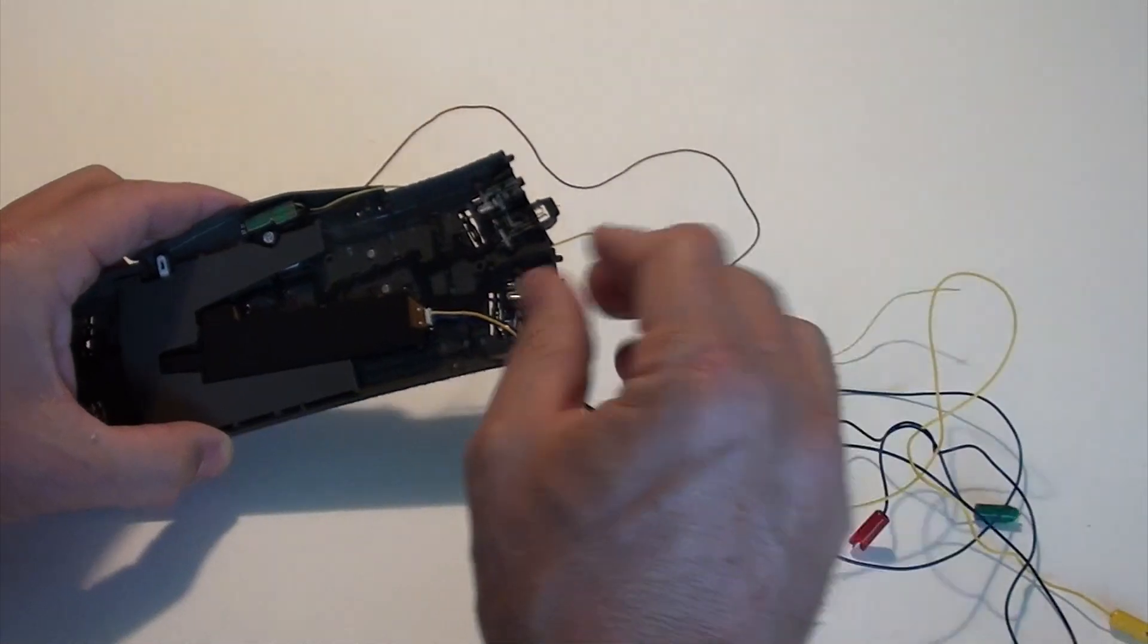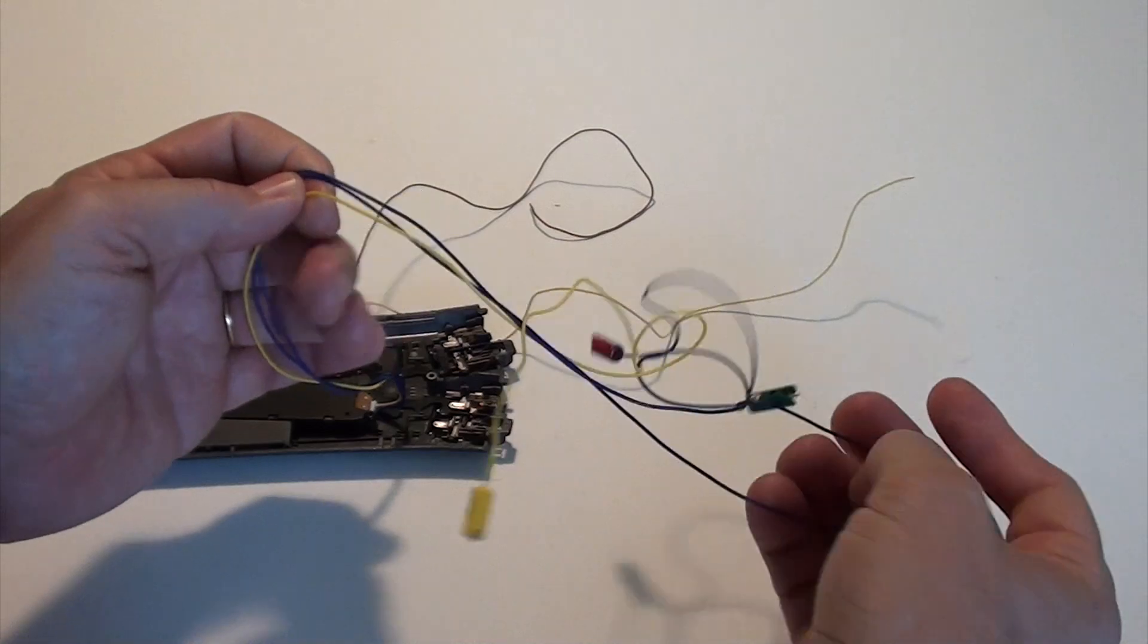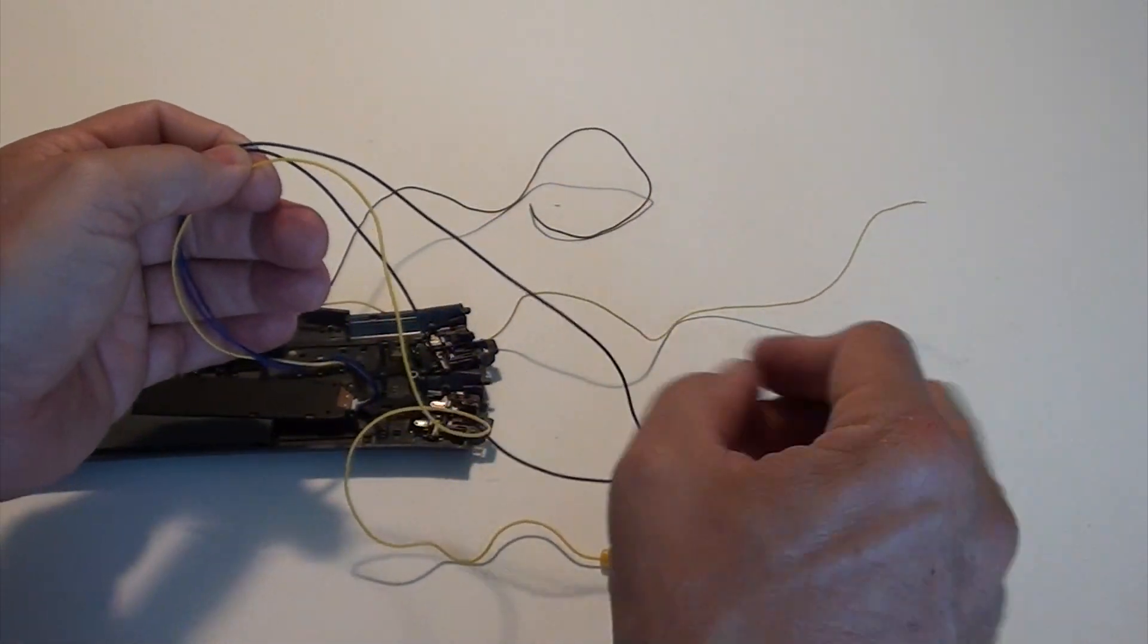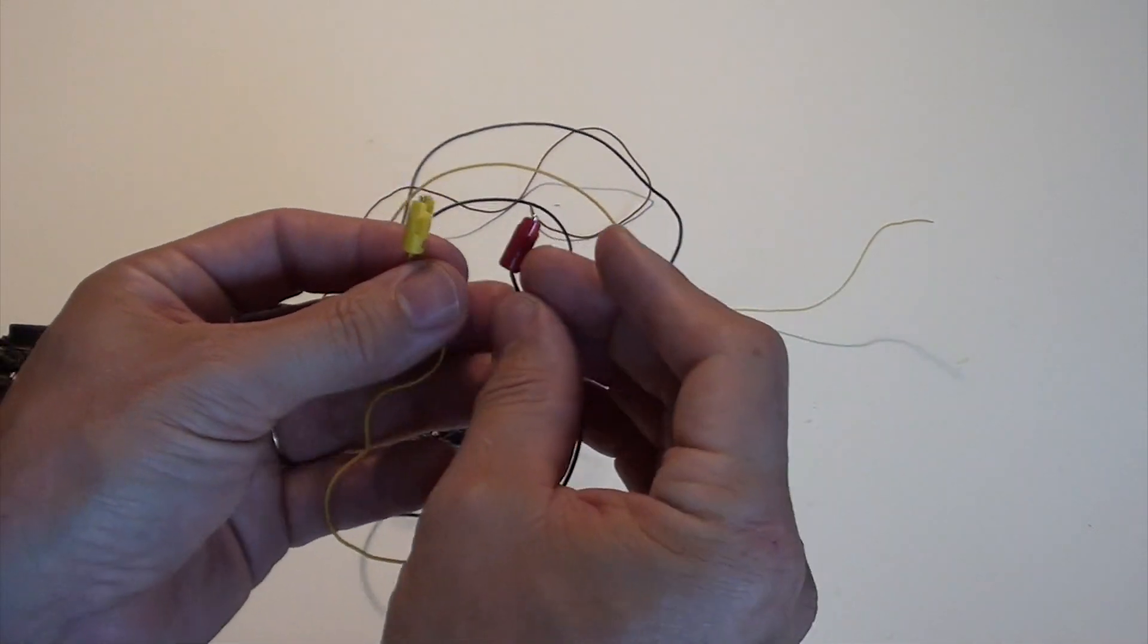And then we have the turnout motor. It comes with one yellow wire and two blue wires. And what I've done here is already attached the three plugs to the wires. Yellow goes to yellow of course.